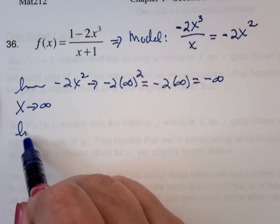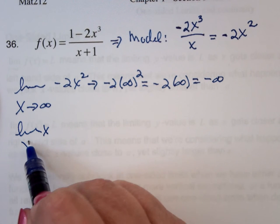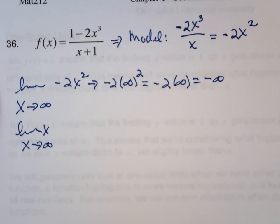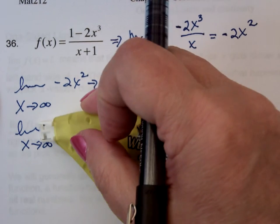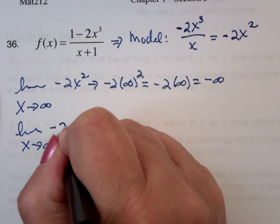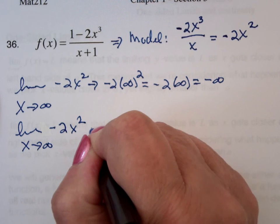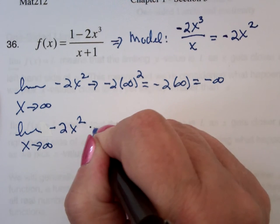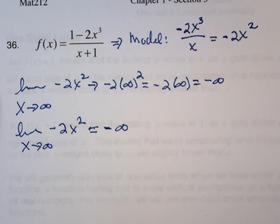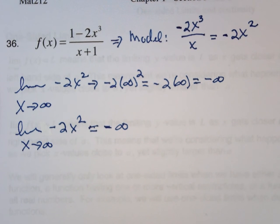So we can say that the limit as x goes to infinity of negative 2x squared goes to, and we normally just say equal, negative infinity. Whatever is happening, it's going down. Down, so the arrow is pointing downward.